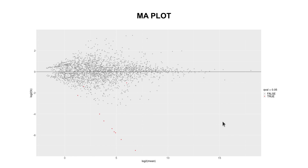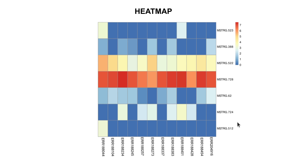Now let's look at the last plot: heat maps. Heat maps are a great way to visualize and interpret gene expression data using a color code. This heat map was generated using differentially expressed genes, showing their expression levels across 12 samples. Low expression genes appear in one color region, and high expression genes in another. For example, the gene MSTR green dot 728 is expressed at high levels across all samples.